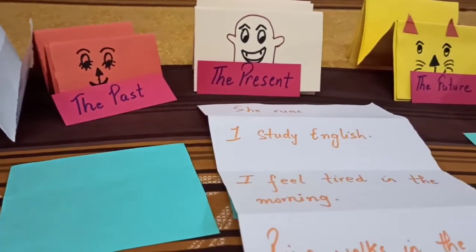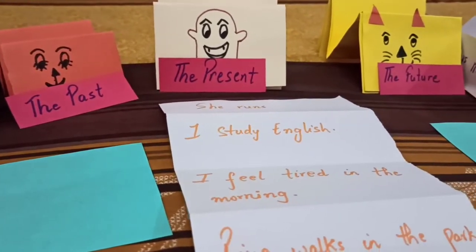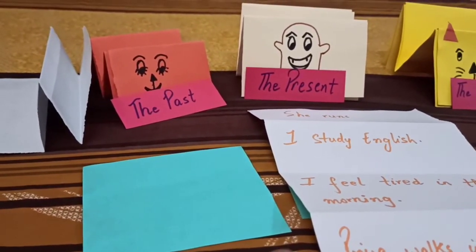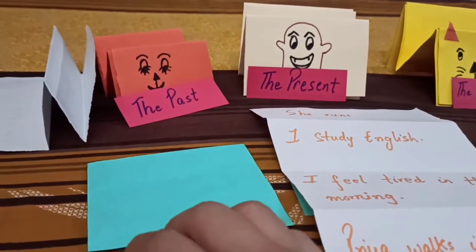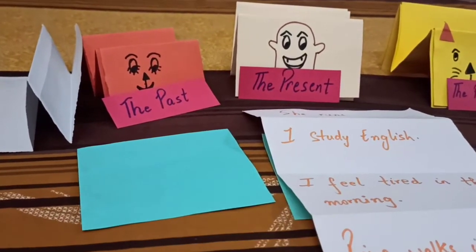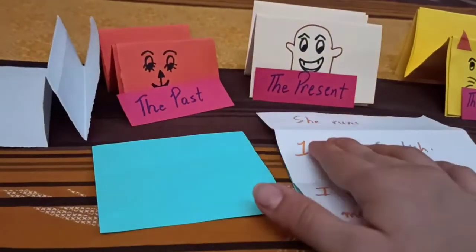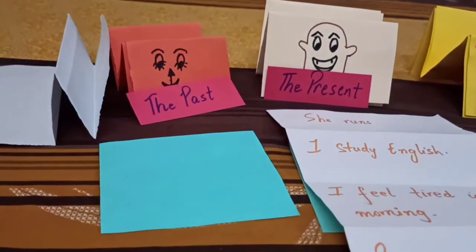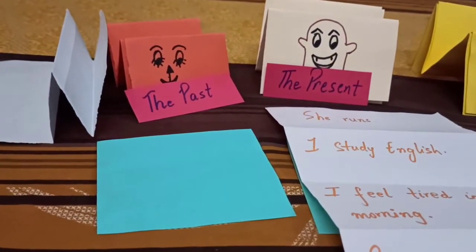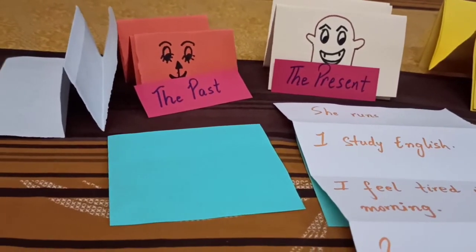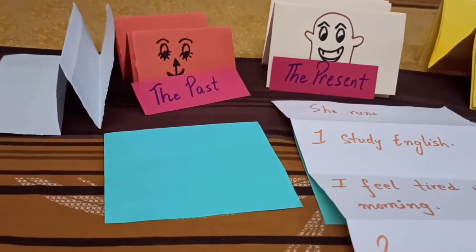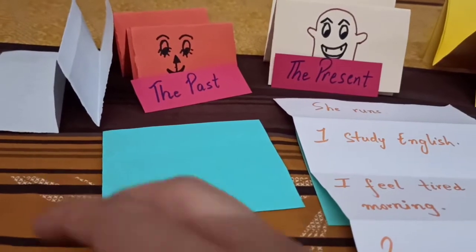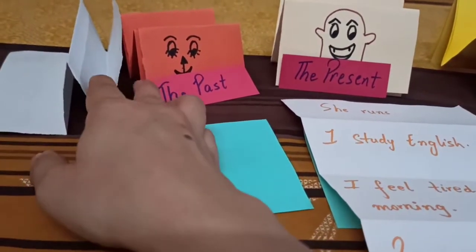So the next friend of the present tense is the past tense. The past says: okay, present, you tell me about what is happening right now. I will tell you what has happened in the past — a time before. Something happened before the present; it may be yesterday or even a longer time before.